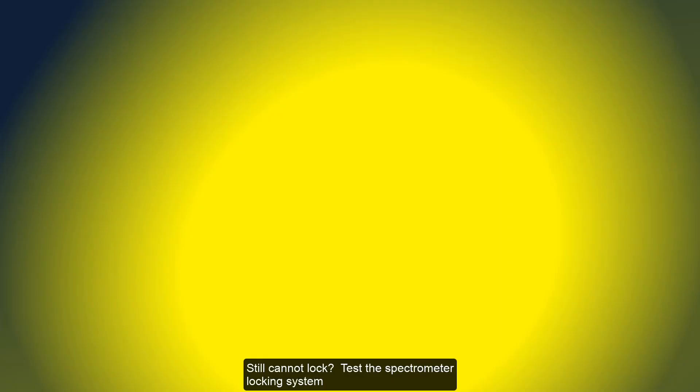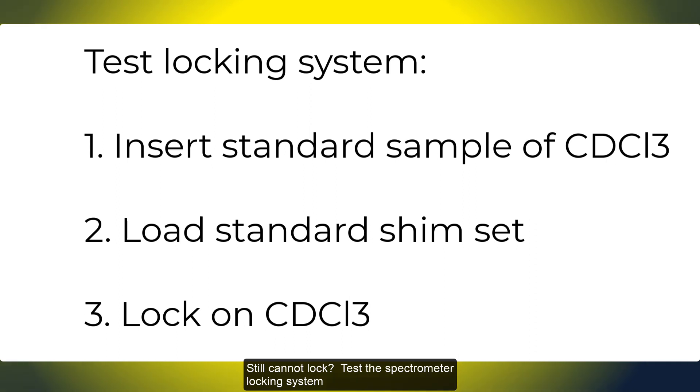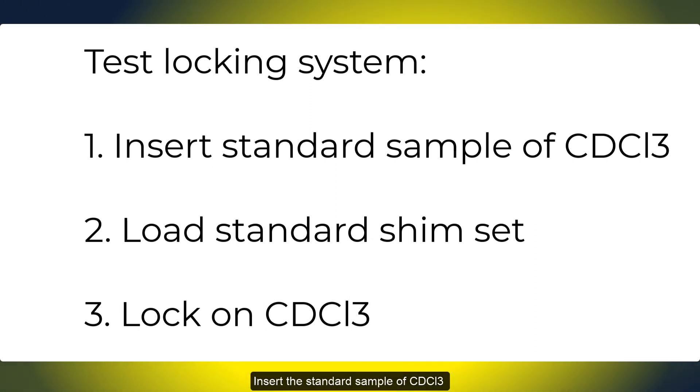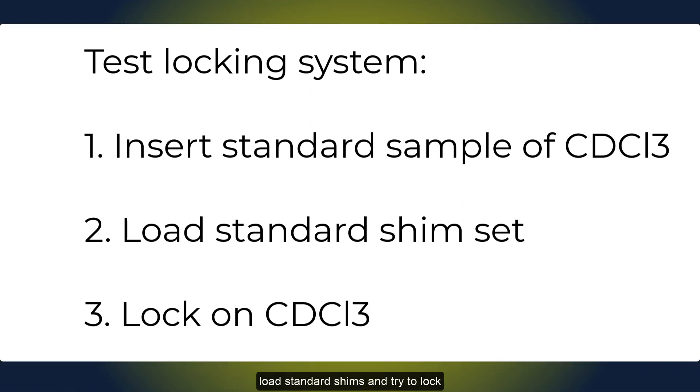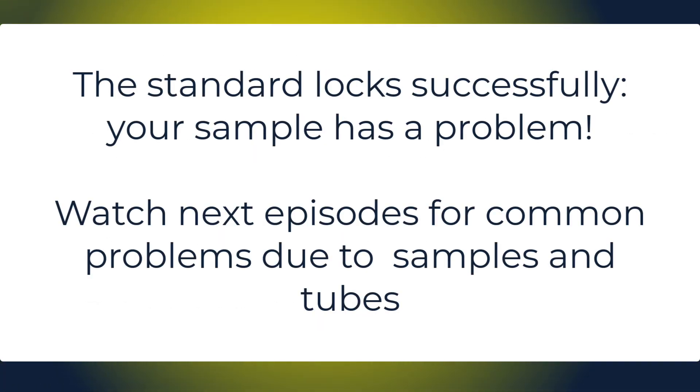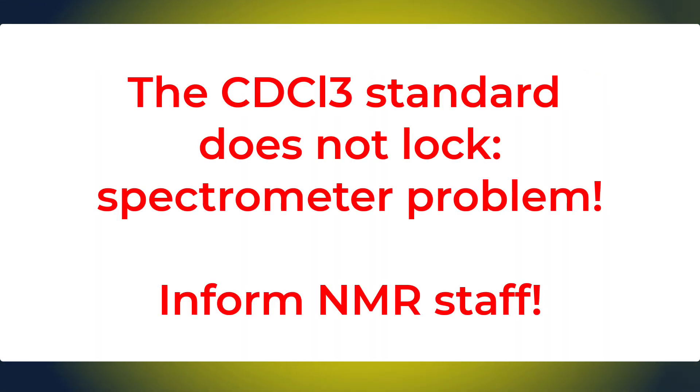Still cannot lock? Test the spectrometer locking system. Insert the standard sample of CDCL3, load standard shims and try to lock. If the standard locks successfully, your sample has a problem. Watch next episodes for common problems due to samples and tubes. If the CDCL3 standard does not lock, spectrometer has a problem. Inform NMR staff.